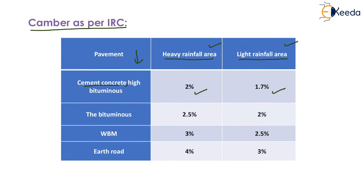For thin bituminous pavement, the camber is 2.5% in heavy rainfall areas and 2% in light rainfall areas. For water bound macadam, the camber is 3% in heavy rainfall areas and 2.5% in light rainfall areas. For earth roads, the camber is 4% in heavy rainfall areas and 3% in light rainfall areas.